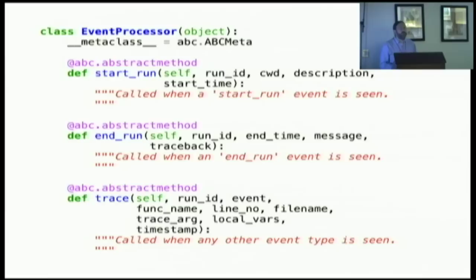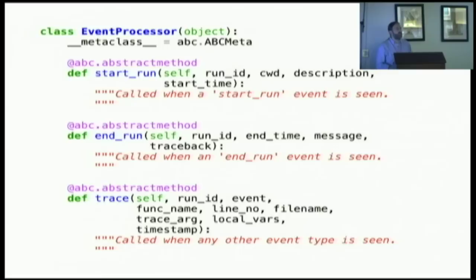I created an abstract base class — using the ABC module — for the event processor API, with methods to start a run, end a run, and record a step in the trace. I used ABC to enforce the API in all the places where I'm using it, so I could be sure I was reusing the API correctly.